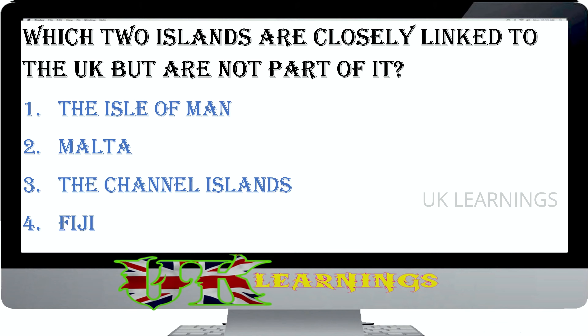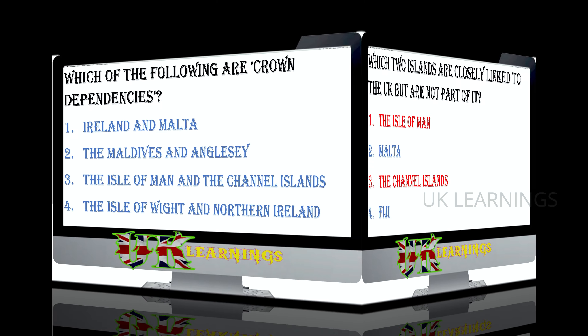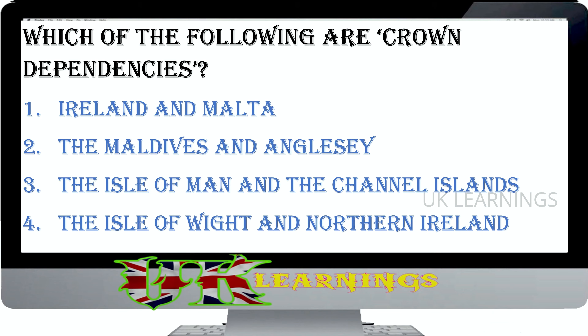Which two islands are closely linked to the UK but are not part of it? The Isle of Man, Malta, the Channel Islands. The correct answer is the Isle of Man and the Channel Islands. Which of the following are Crown Dependencies? Ireland and Malta, the Maldives and Anglesey, the Isle of Man and the Channel Islands, the Isle of Wight and Northern Ireland. The correct answer is the Isle of Man and the Channel Islands.